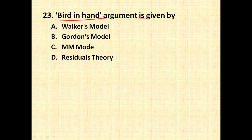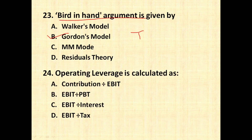The next question is: the bird-in-hand argument was given by whom? The bird-in-hand argument was given by Gordon's model. What Gordon says is that if you have the option of getting a dividend today or in the future, shareholders will always prefer to receive the dividend today, because the future is uncertain and we do not know whether we will get the same amount later. So a bird in hand is better than two in the bush — whatever we get immediately is better than what we might get in the future.